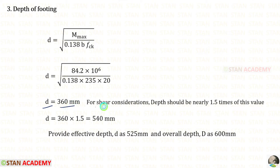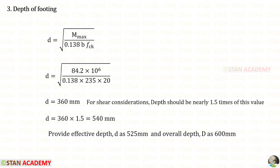That value is small. For shear consideration, the depth should be nearly 1.5 times this value: 360 into 1.5 gives 540 mm. We provide an effective depth D of 525 millimeter and overall depth D as 600 millimeter.